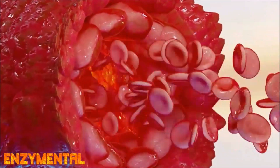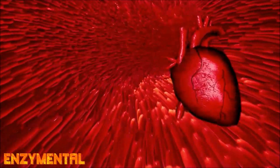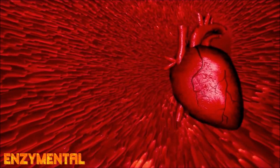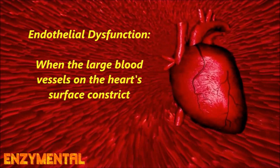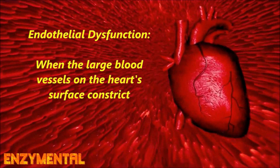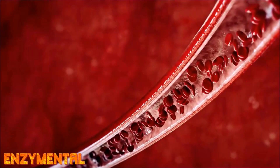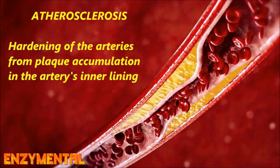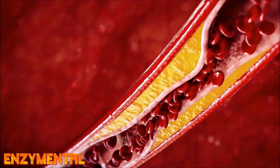Heart disease develops primarily from abnormalities in the vascular endothelium, which is the inner lining of veins, arteries, and capillaries. These abnormalities are known specifically as endothelial dysfunction, and it develops from a deficiency of nitric oxide inside the blood vessel walls, which otherwise would promote optimal vasodilation. Endothelial dysfunction always precedes the accumulation of arterial plaque known as atherosclerosis, and a large culprit behind this is lipopolysaccharide-induced vascular inflammation.